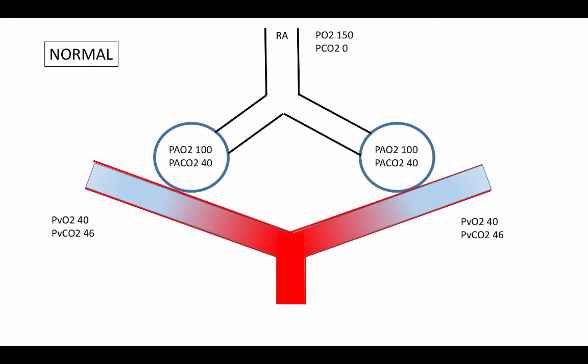As this flows down to the alveoli, we have alveolar partial pressures of oxygen around 100, and alveolar carbon dioxide levels of about 40. Venous blood then flows by the alveoli. The gases equilibrate, and we end up with arterial oxygen pressures of about 95 millimeters of mercury, and arterial CO2 levels around 40. And those are the numbers we think of as normal arterial blood gases.